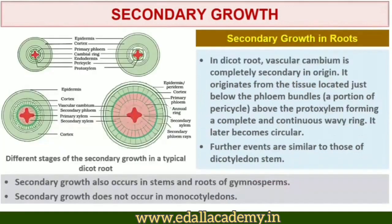Lastly, secondary growth in roots. In the dicot root, the vascular cambium is completely secondary in origin. It originates from the tissue located just below the phloem bundles, and a portion of pericycle tissue above the protoxylem, forming a complete and continuous wavy ring which later becomes circular. Further events are similar to those already described for a dicotyledon stem.